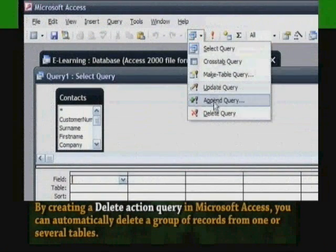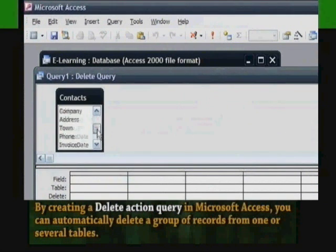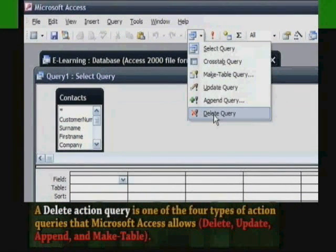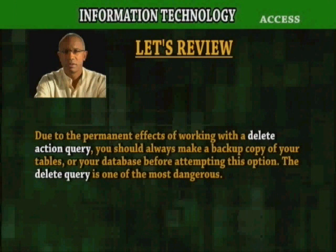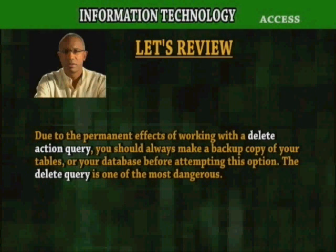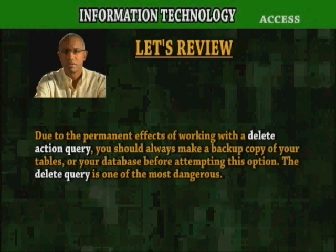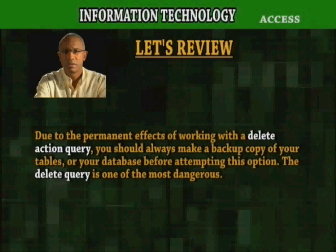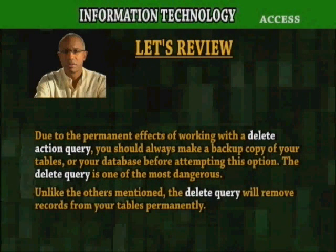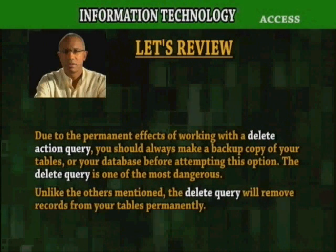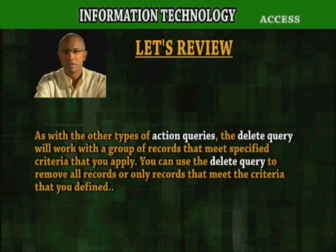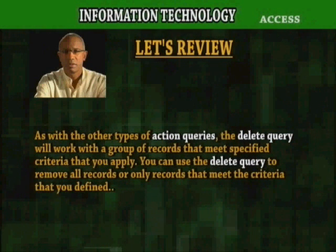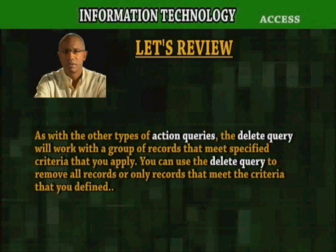By creating a delete action query in Microsoft Access, you can automatically delete a group of records from one or several tables. A delete action query is one of the four types of action queries that Microsoft Access allows: Delete, Update, Append, and Make Table. Due to the permanent effects, you should always make a backup copy of your tables or database before attempting this. The delete query is one of the most dangerous — it will remove records from your tables permanently. It will work with a group of records that meet specified criteria, and you can use it to remove all records or only those that meet the criteria you defined.